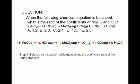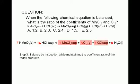On to chlorine — we try to balance this last, since it appears in 3 different places on the right. We can verify that at this point, chlorine is already balanced. We have 16 chlorines on the right: 4 in manganese 2 chloride (2 times 2 equals 4), plus 10 in the diatomic chlorine gas (5 times 2 equals 10), plus 2 in potassium chloride. 4 plus 10 plus 2 equals 16. Therefore, we need 16 chlorines on the left — and we already have 16 chlorines on the left.